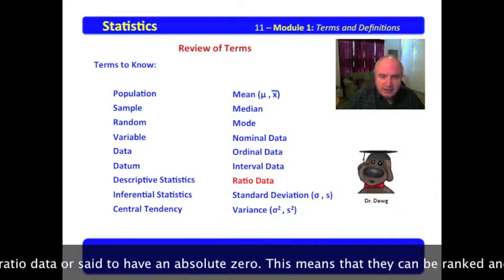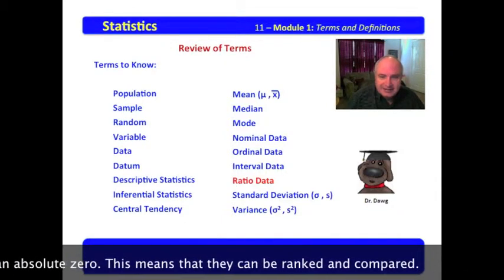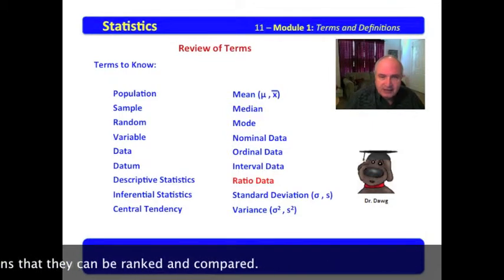Generally, ratio data are said to have an absolute zero. This means that they can be ranked and compared.